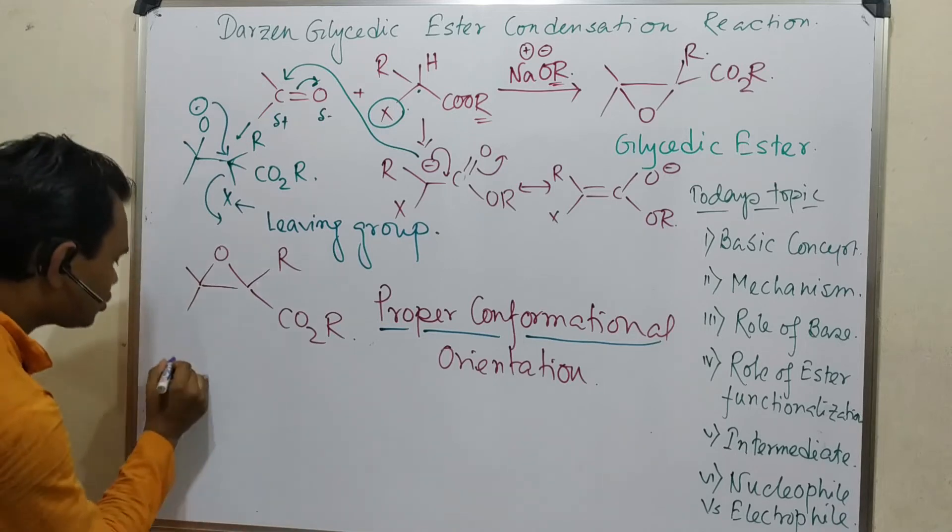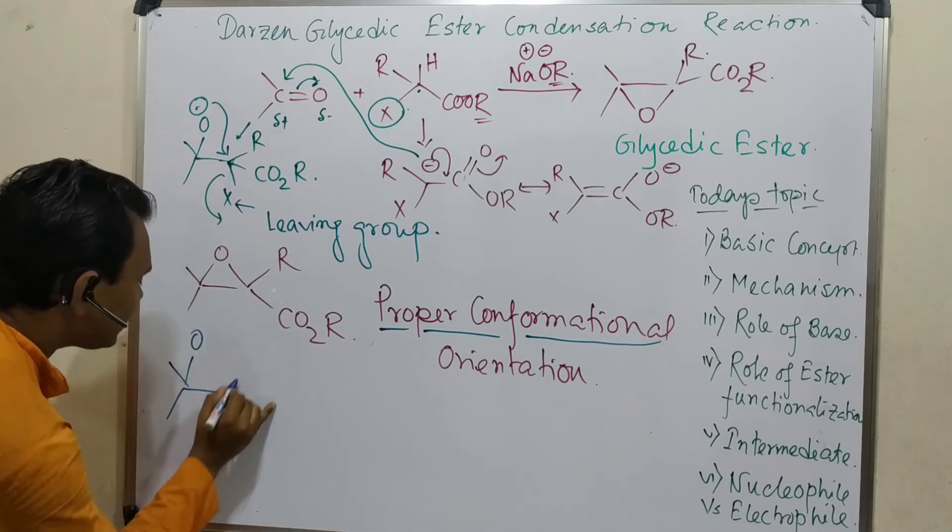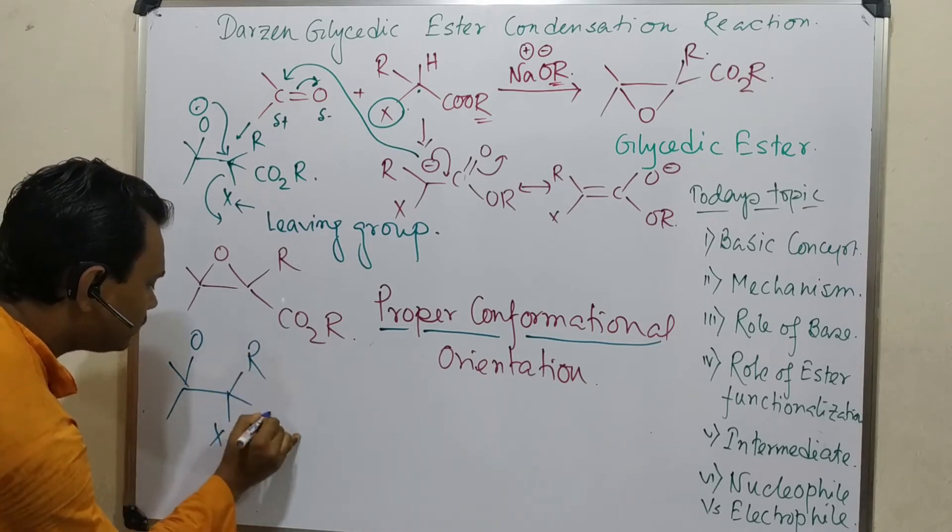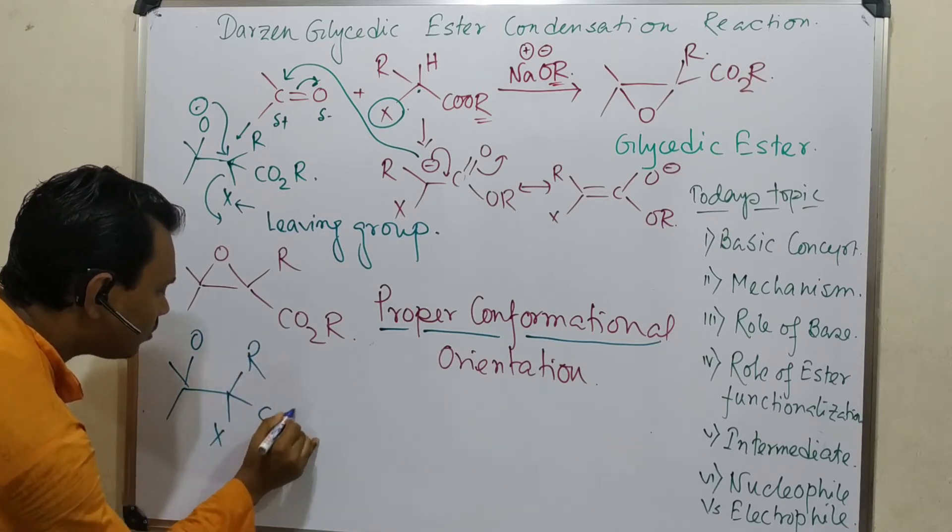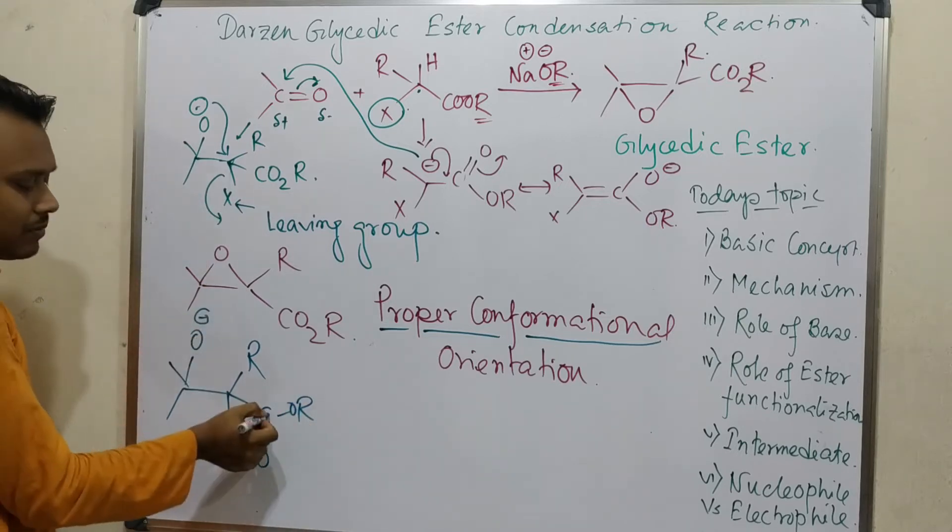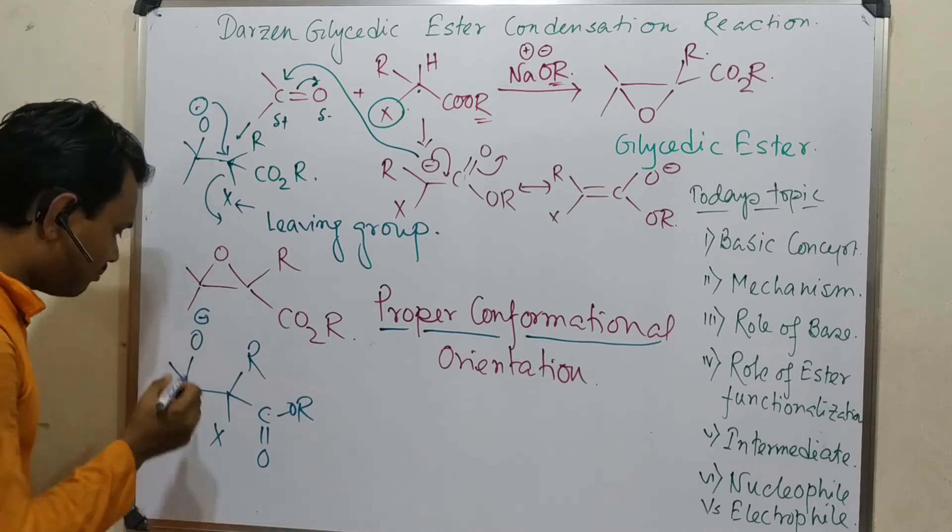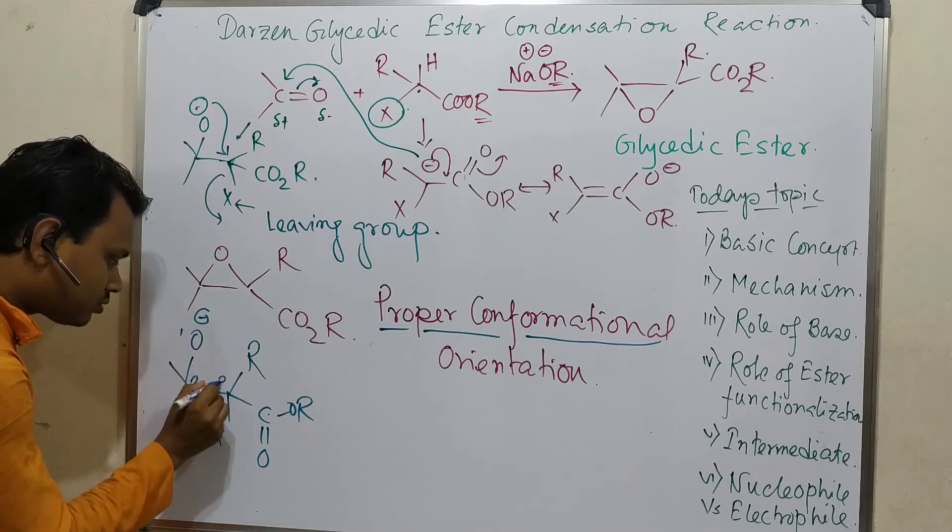And that is the reason it will attack and this X will leave to produce this final epoxide moiety. Now there should be another confusion. What confusion? You may think that we have many times observed lactone formation. What do I mean? Let's draw it again first. This is O minus, this is X, this is R. Even you can consider this C=O-OR.